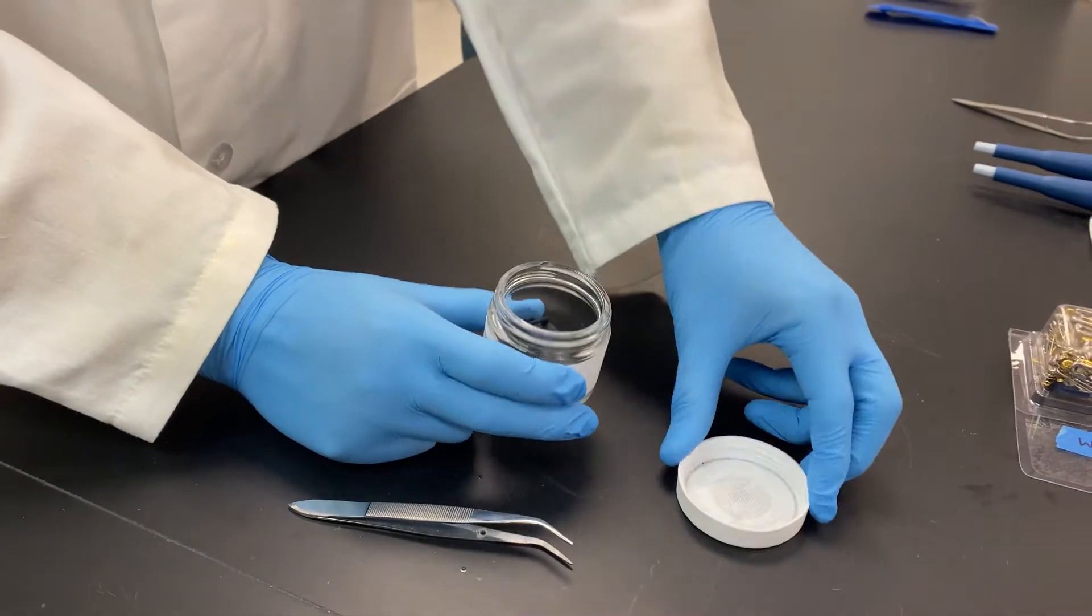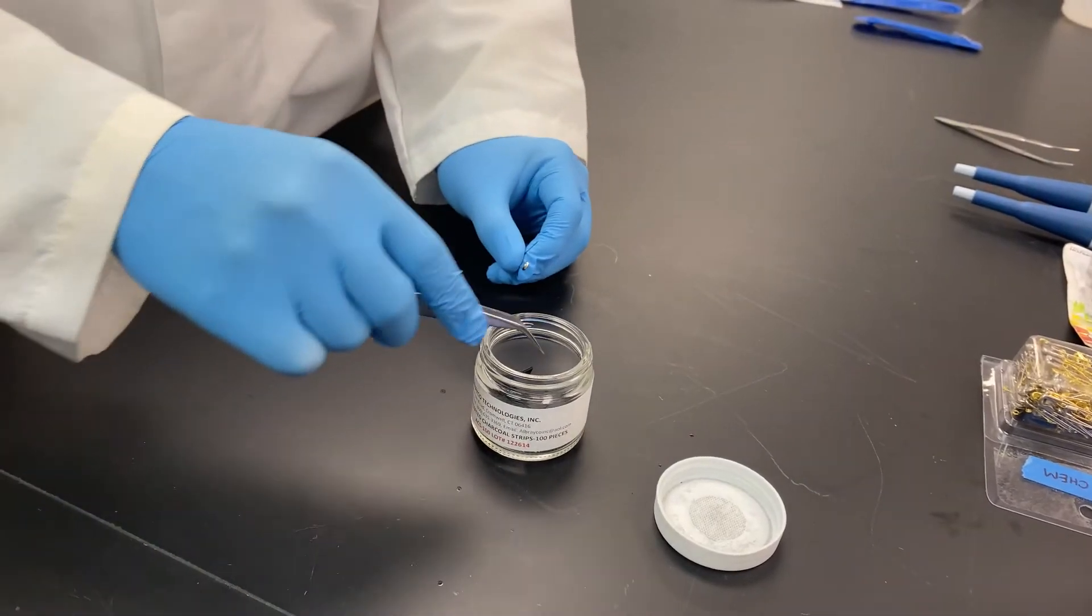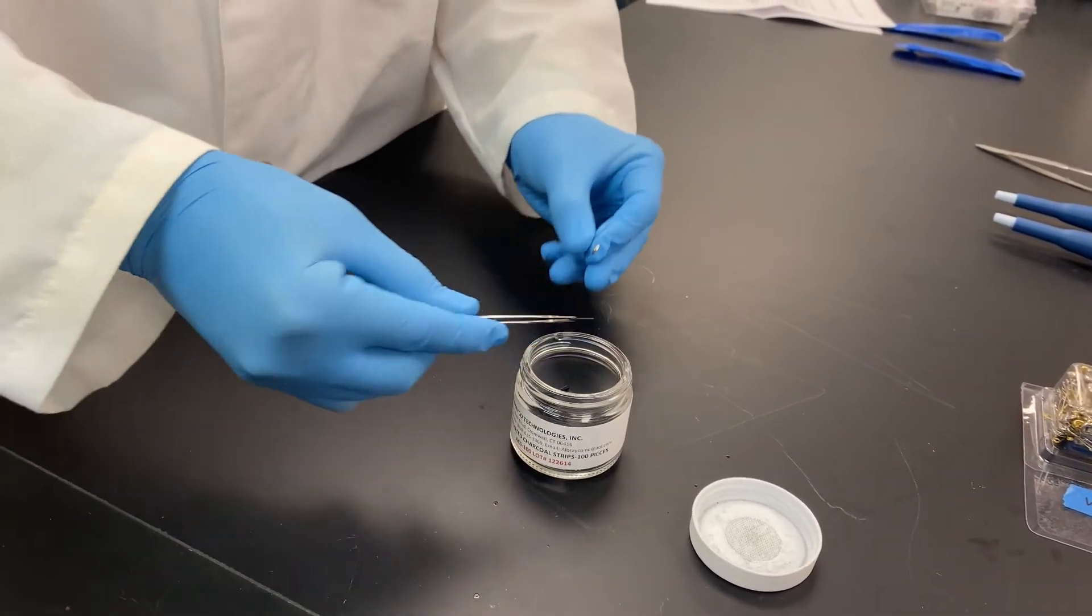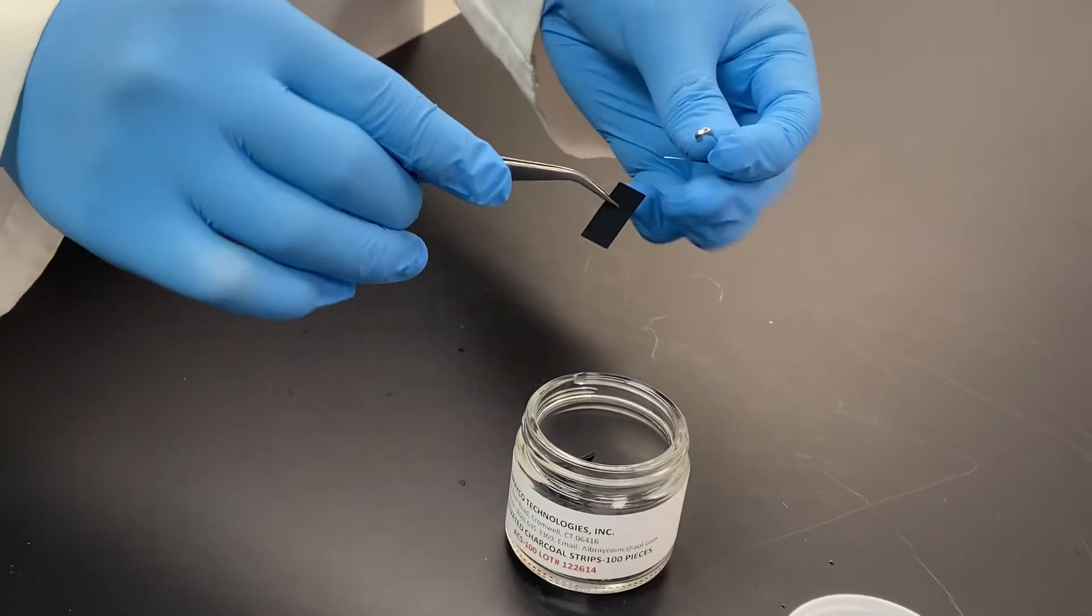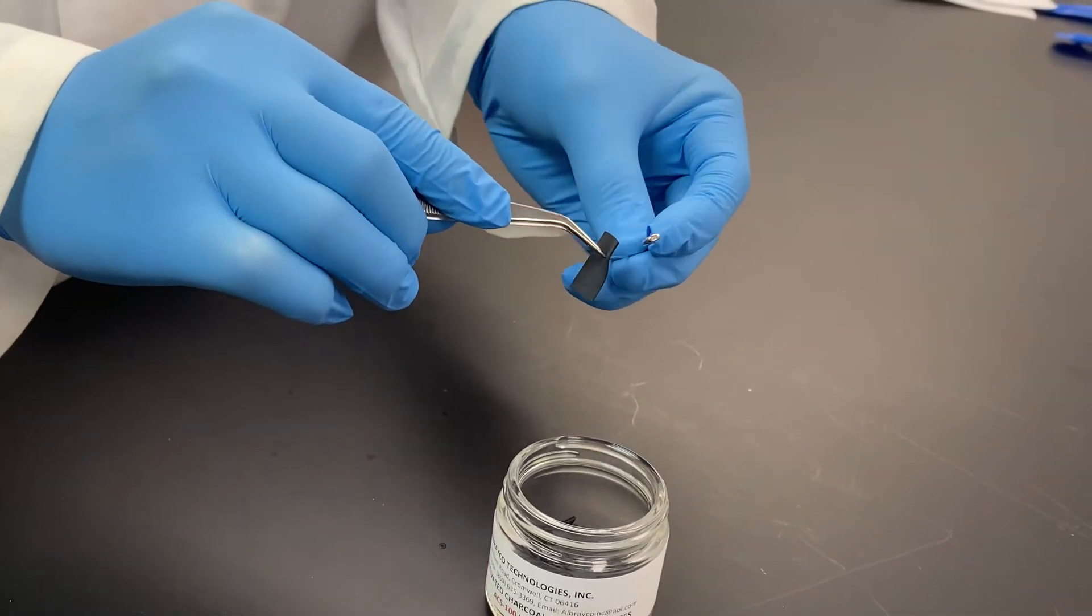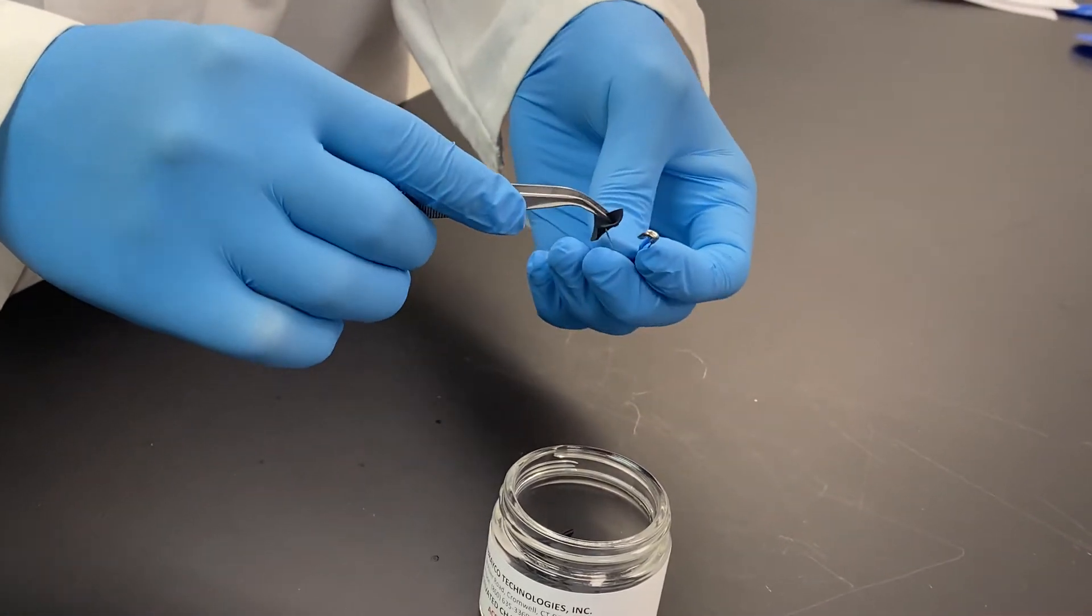First, pick up your activated charcoal strip using your tweezers. Only handle the strip using these or clean gloves. Now, open the safety pin and stick it through the activated charcoal strip. Make sure that it is secure.